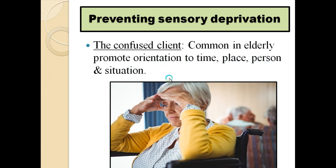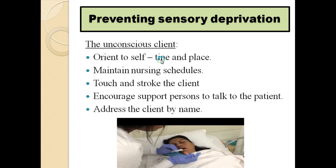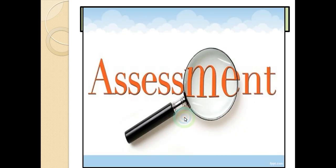For confused clients, especially elderly patients, orient the person to time, place, person, and situation. For unconscious patients, orient to self, time, and place. Even though an unconscious patient cannot respond, they may still be able to hear — so it is important to talk to them, maintain nursing schedules, touch and stroke the patient, and address the client by name.